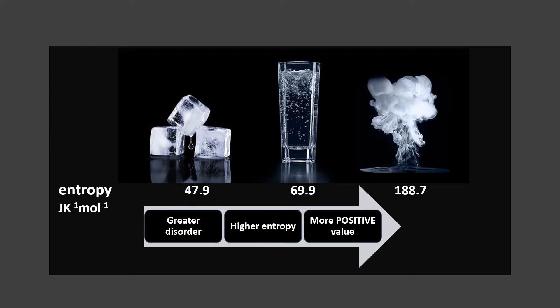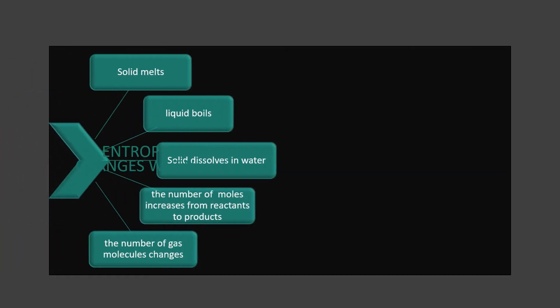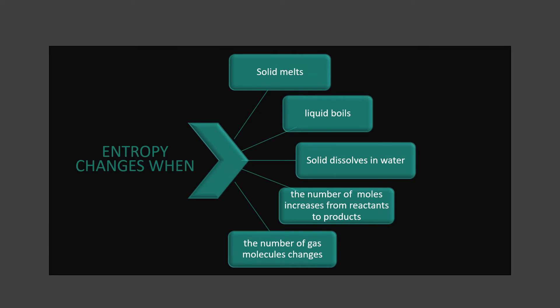The gaseous state has the highest entropy, with the most positive value of 188.7 joules per kelvin per mole. This will be an important part when we get to calculations. So before we go into calculations, let's have a look at some instances where entropy changes and explore what you would expect the value of entropy to be like. These are some ways in which the entropy changes: when solids melt or liquids boil, when a solid dissolves in water, when the number of moles increases from reactants to products, or when the number of gas molecules changes. Gases have higher entropy compared to solids or liquids.